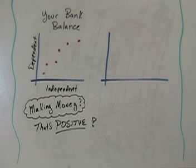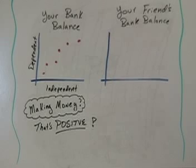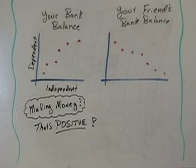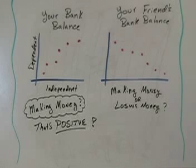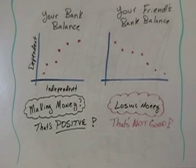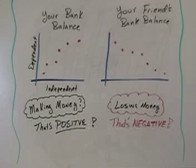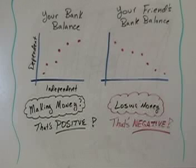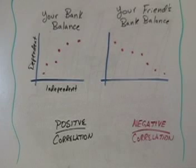Now let's look at a new graph. This time let's say this is your friend's bank account. And we'll throw up some data points. According to this graph, is our friend making money or losing money? Well, this time it's different. This graph shows he's losing money. That's never good. In fact, we say that's negative. This graph shows a negative correlation, because as the amount of time increases, the balance in your friend's bank account is going down. So now we see two graphs side by side, one with a positive correlation, one with a negative correlation.